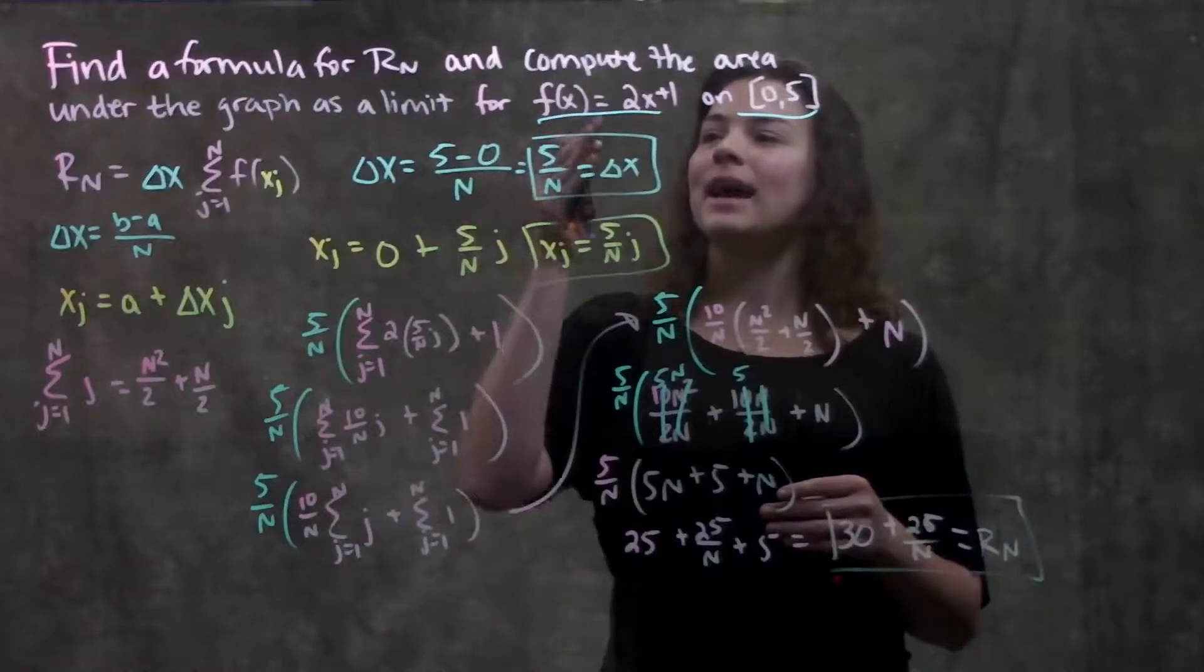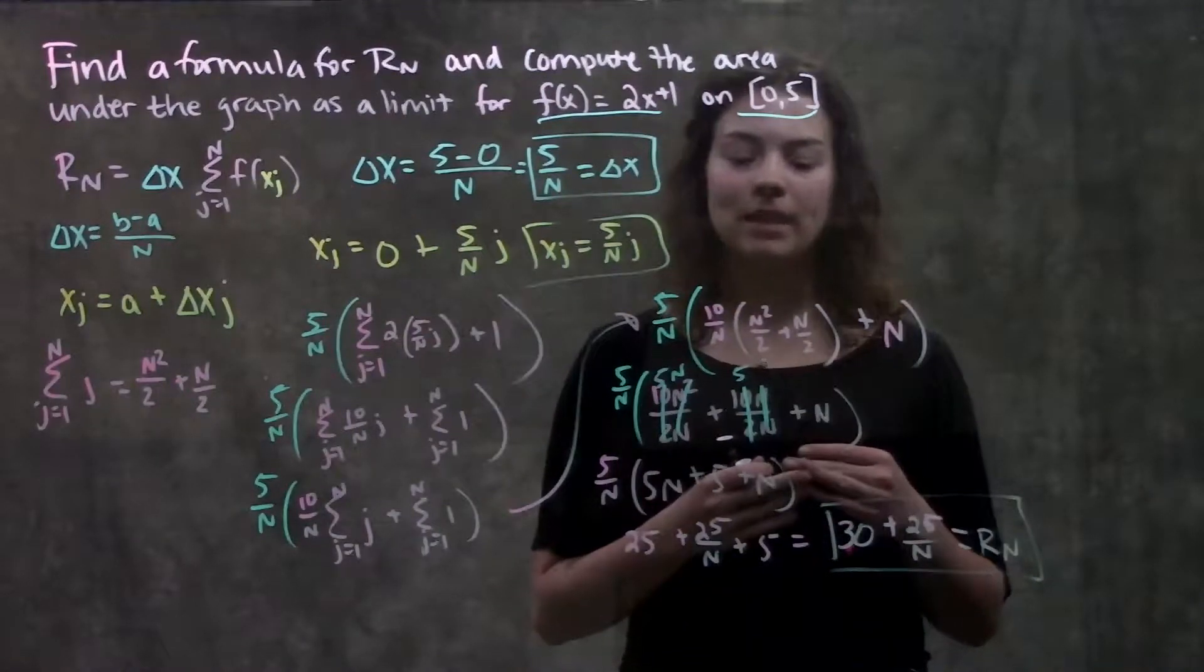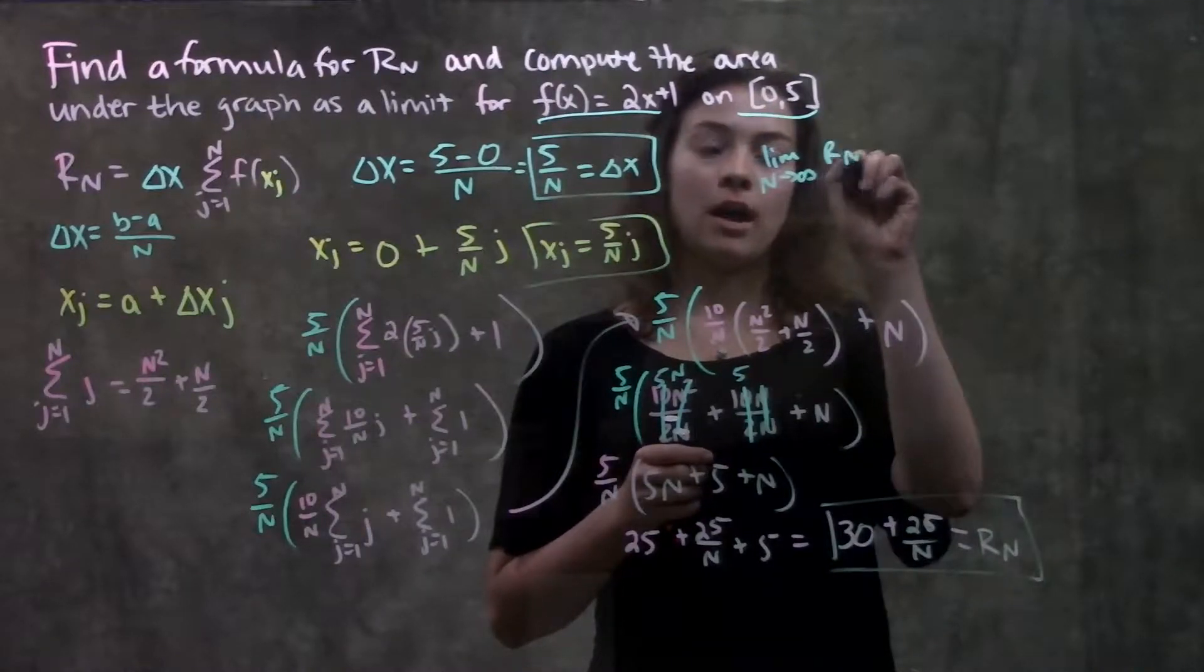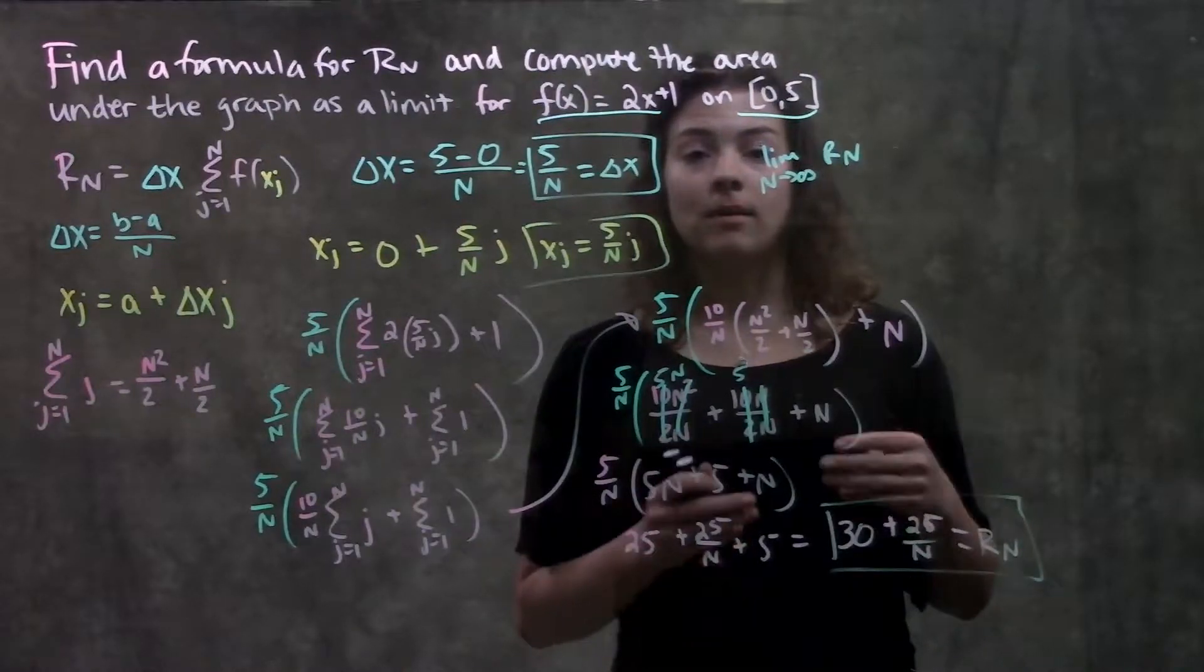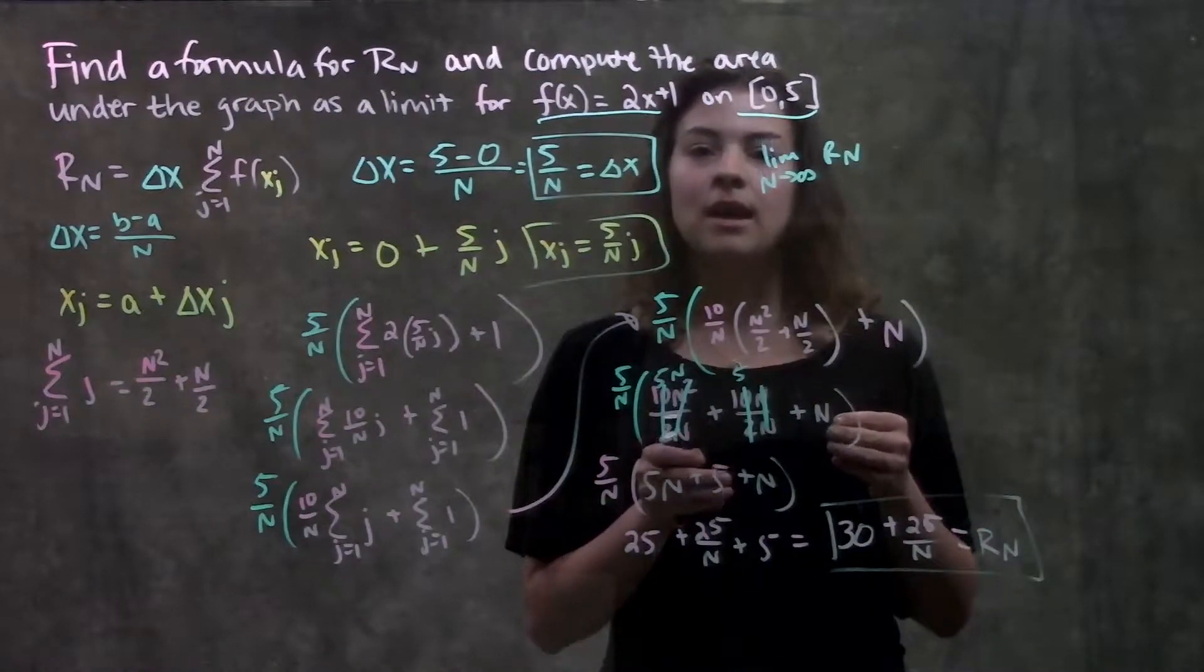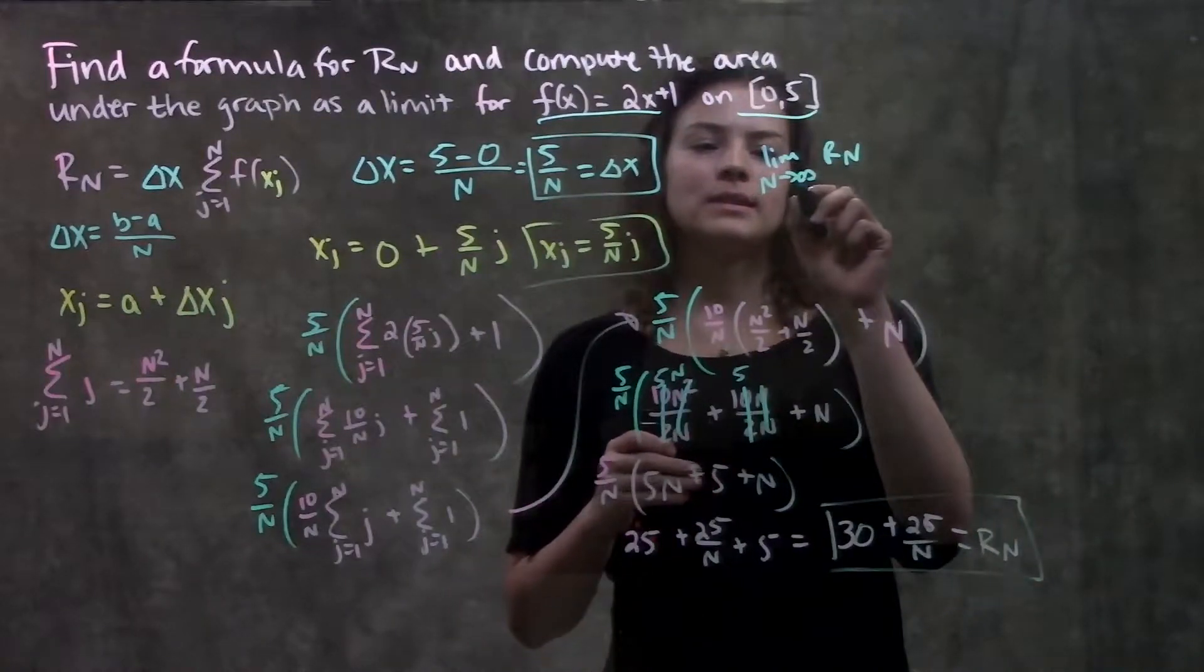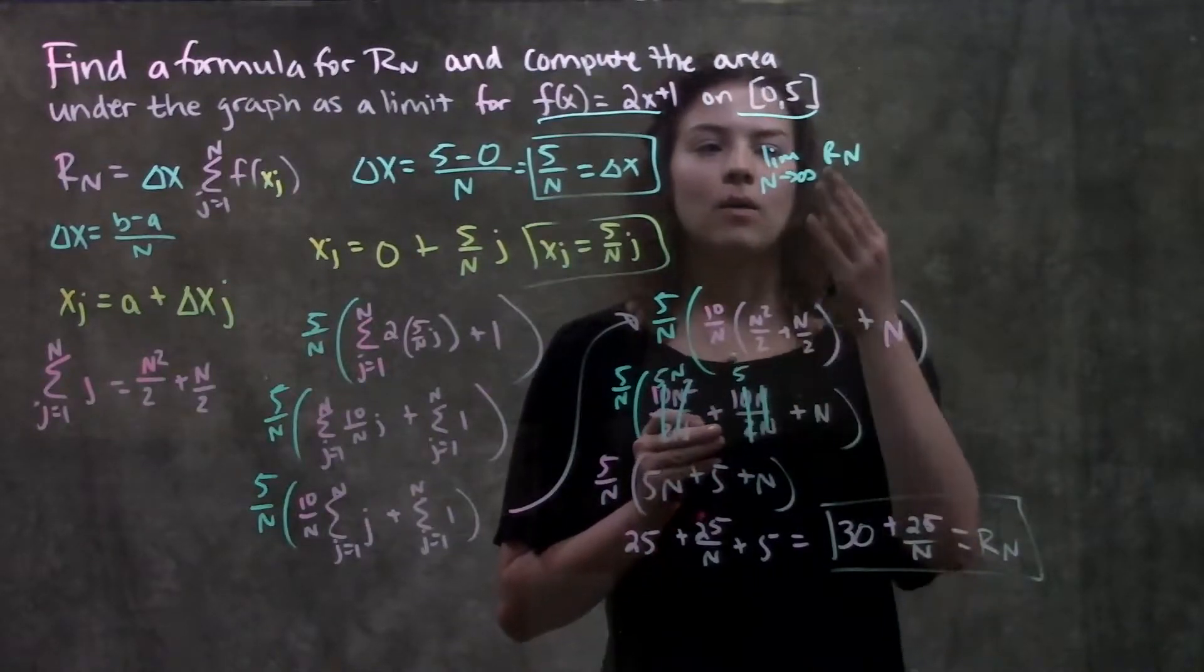The second part asks us to calculate the area as a limit for this function. Whenever it's asking to calculate the area as a limit, that's just asking us to find the limit as n approaches infinity of this formula we found, of Rn. Because, remember, the more rectangles that we have in our approximation, the more exact our approximation will be. If I had 100 rectangles with really tiny widths over my function, I'll have a much more exact approximation of what the area is than if I had two rectangles with two really big widths. So, this is saying, if I had an infinite number of rectangles, the most exact approximation that I could get, what is that value?